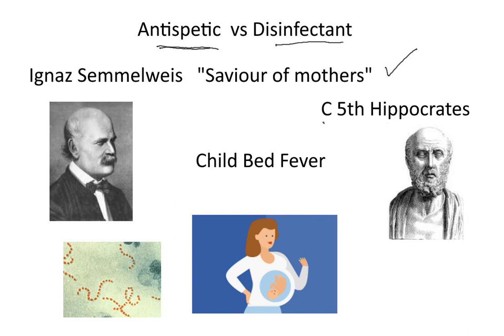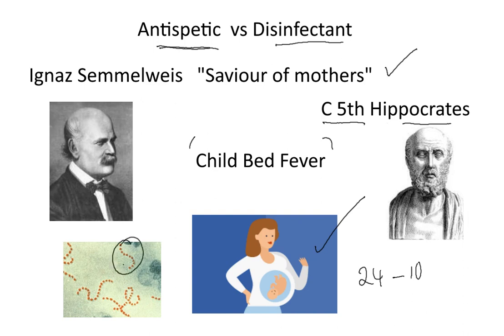Way back in the 5th century, Hippocrates, the Greek father of medicine, spoke about a disease which later became called childbed fever, in which pregnant women would get infections 24 hours to 10 days after giving birth. We know today that the disease was caused by a bacteria, which is actually a type known as a Streptococcus.